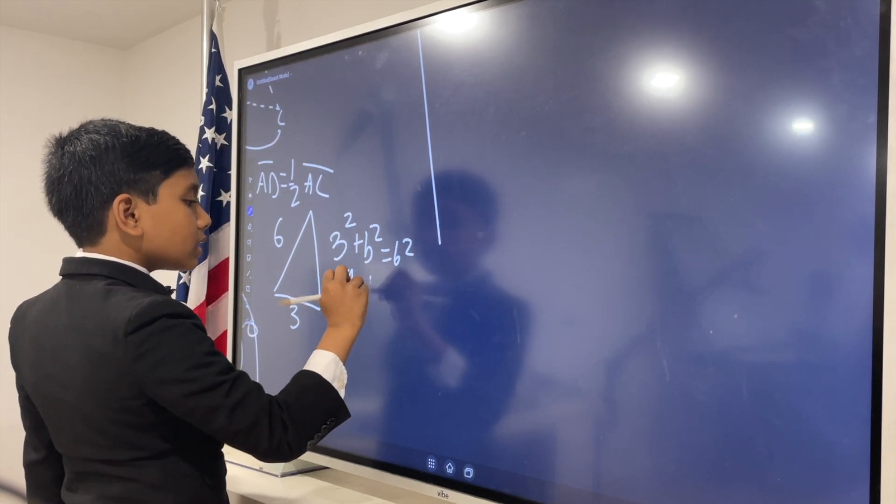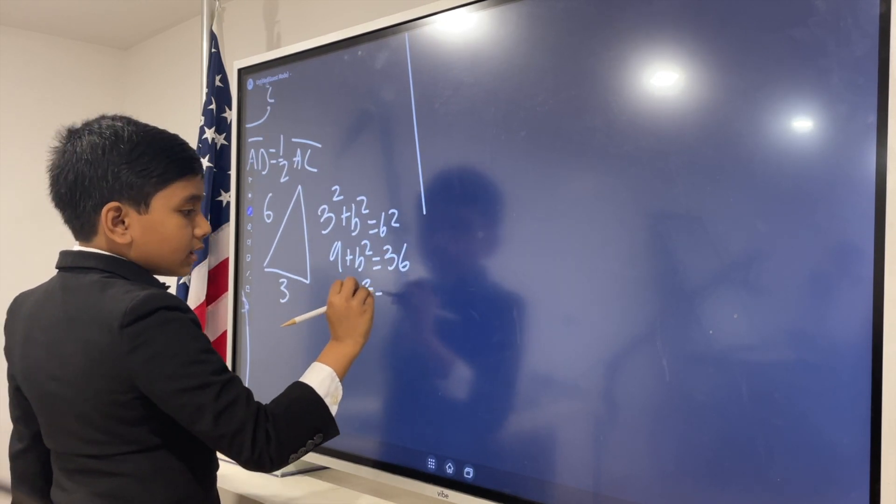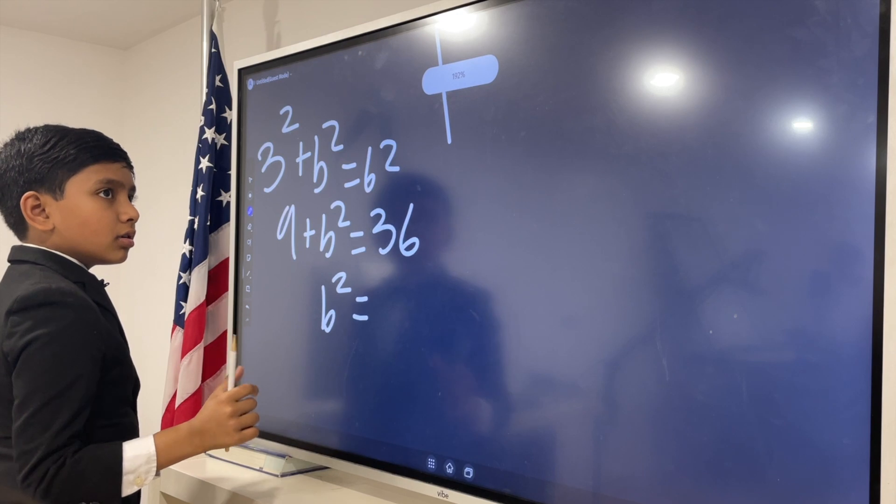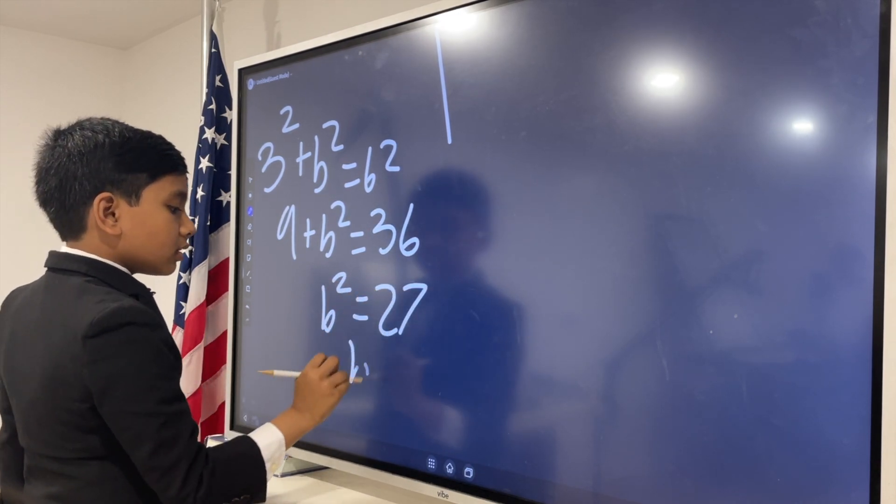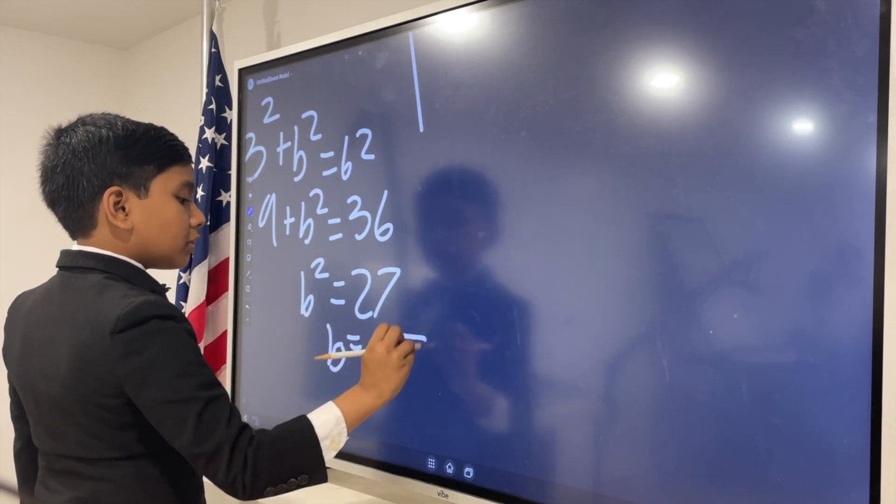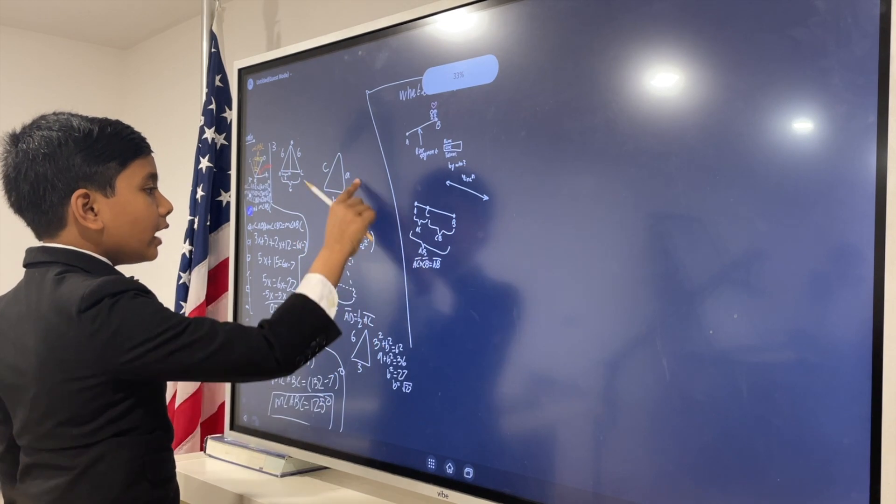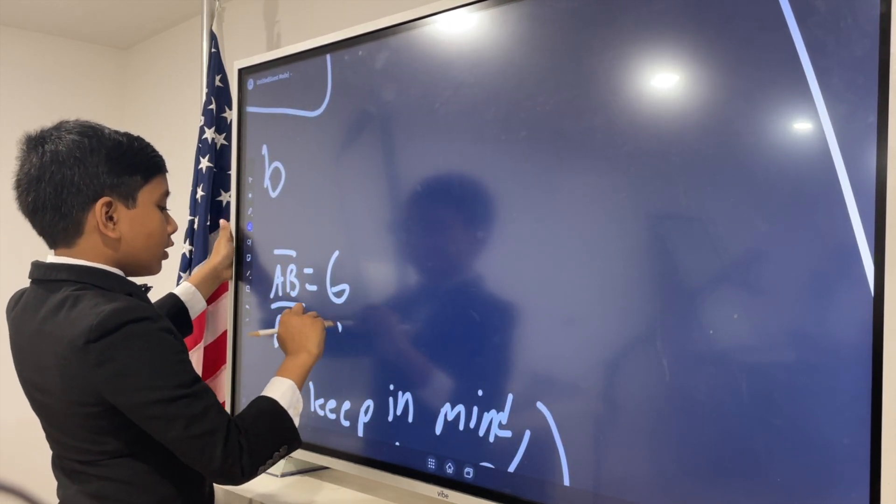So, 9 plus B squared equals 36. So, B squared is equal to 27. B equals root 27. In other words, we found BD. It is the square root of 27.